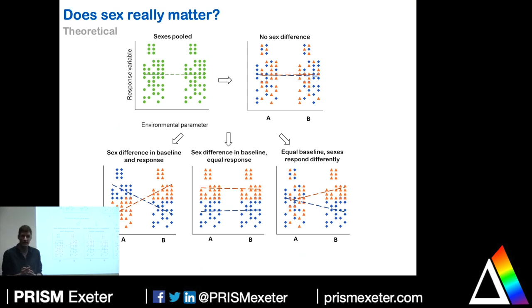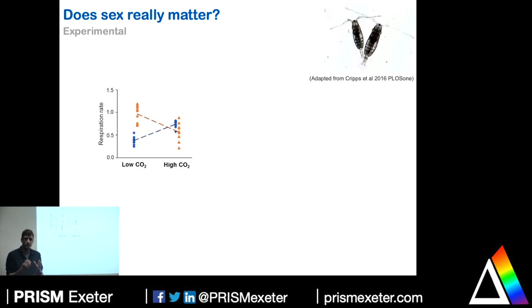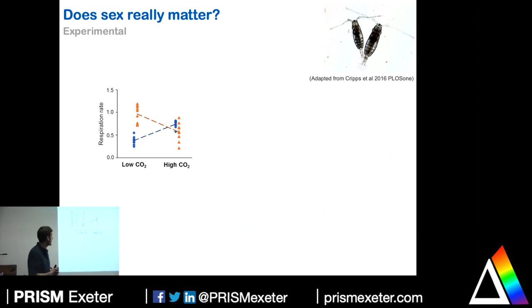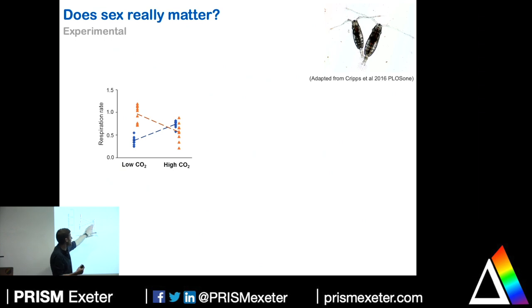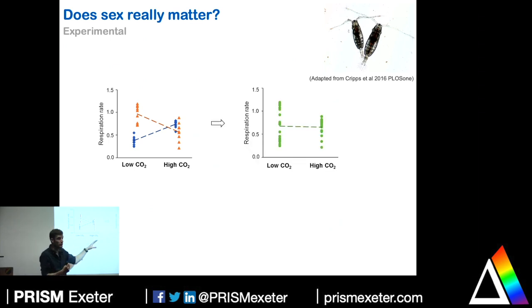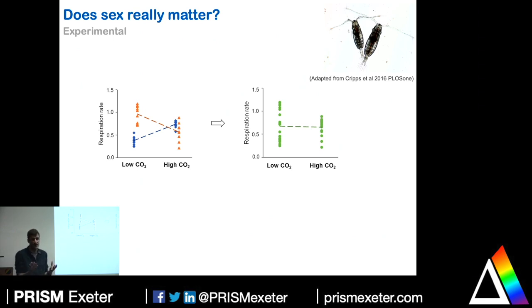Does this play out in real research? A study by colleague Gemma Cripps at Swansea examined a marine copepod, a crustacean, exposed to low seawater pH — elevated pCO2 — a phenomenon called ocean acidification, a type of climate change occurring in our oceans. She measured respiration rate — the amount of oxygen animals take from their environment. Under normal present-day CO2 conditions, females use less oxygen than males. But when exposed to a future climate change scenario, females increase their respiration rate and males decrease theirs. By pooling sex you completely lose this subtle but biologically important difference, misinterpreting the impact of climate change on this species.